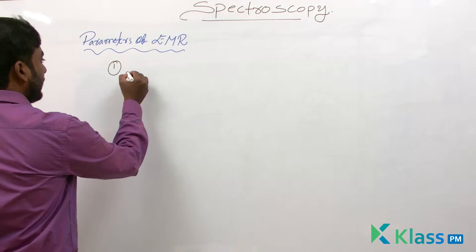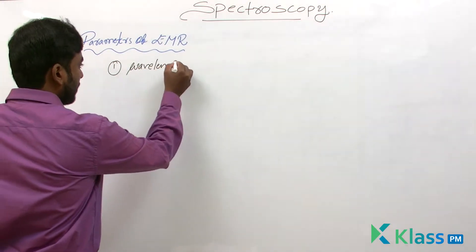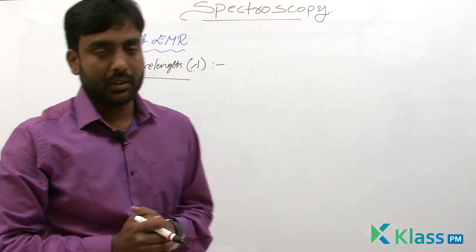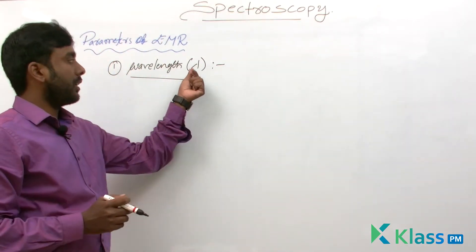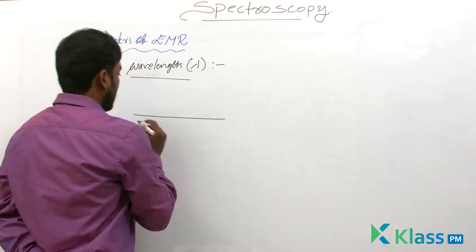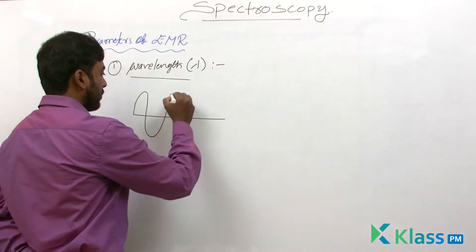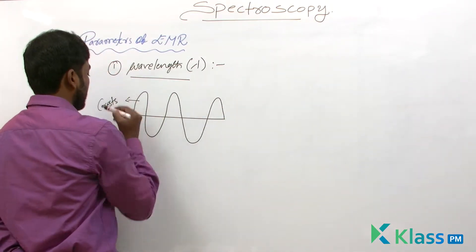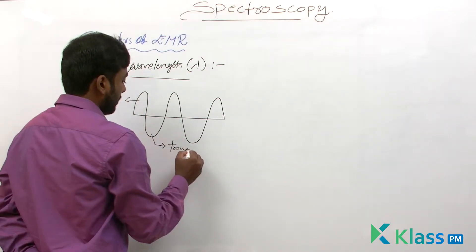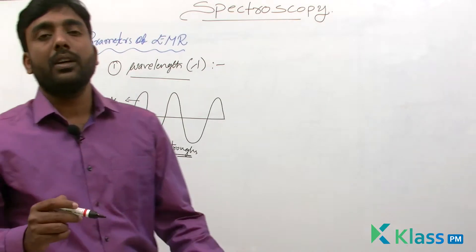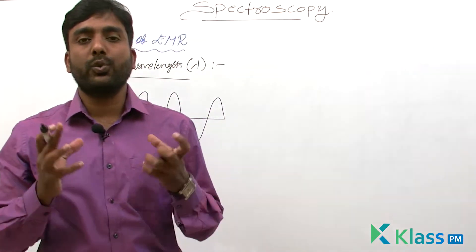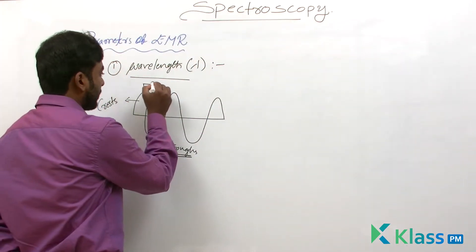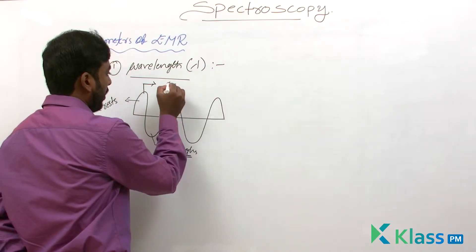The first parameter is wavelength, indicated by the Greek letter lambda. The wave has crests and troughs — the peaks are called crests and the lower points are called troughs. Wavelength is the distance between two successive crests or troughs.